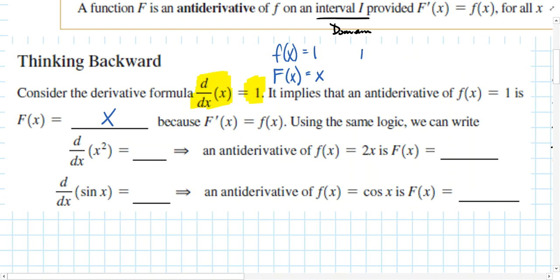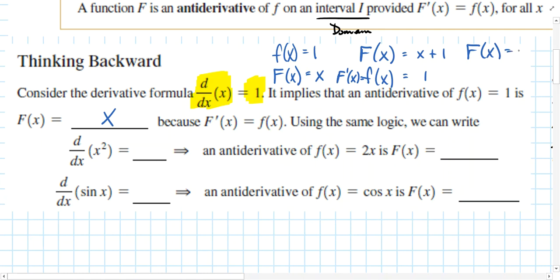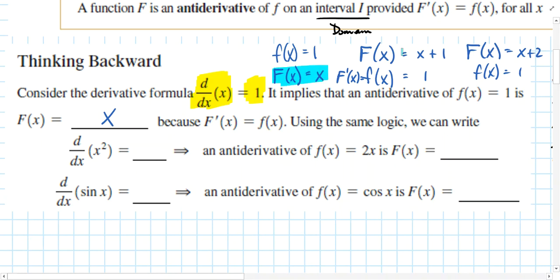We do have to be careful here. What if capital F was x plus 1? Its derivative is also 1. What if capital F was x plus 2? Its derivative is also 1. What's interesting about antiderivatives is that there's not just one answer — in fact, there's an infinite number of answers. As long as a constant is added or subtracted from the parent function, the derivative of any of those family of functions will also equal the original function.